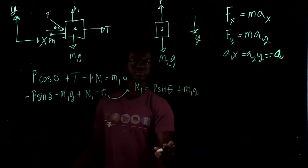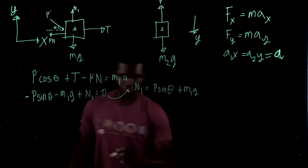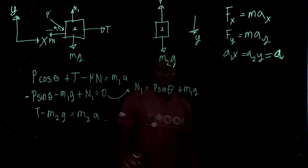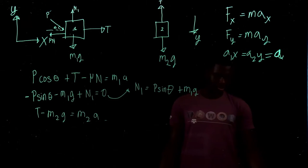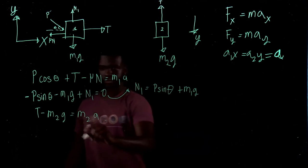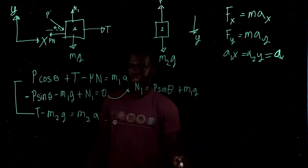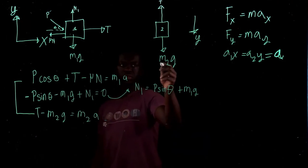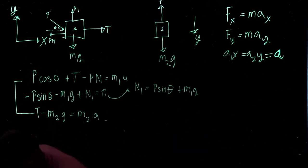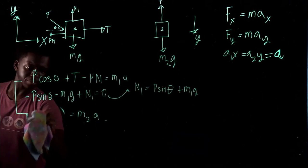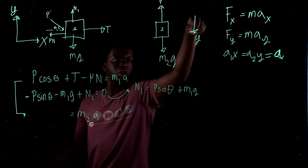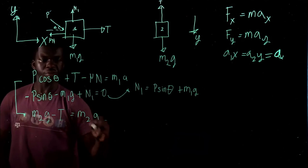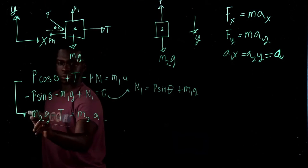Now we have all our formulas and can find the acceleration of the blocks by combining the x-equation for block one and the y-equation for block two. The T's cancel out: P cosine theta plus M2G minus mu N equals M1 plus M2 times A. We already know N equals P sine theta plus M1G, so we substitute that in.